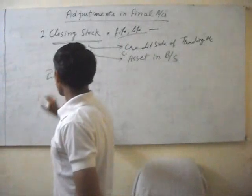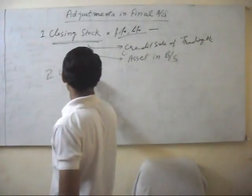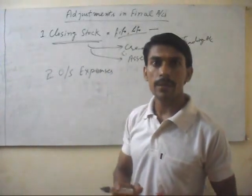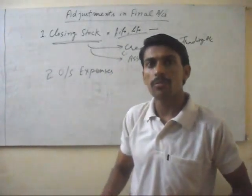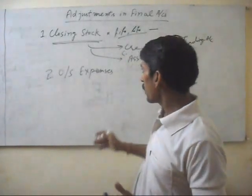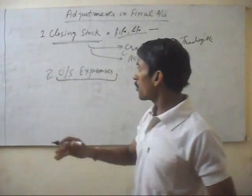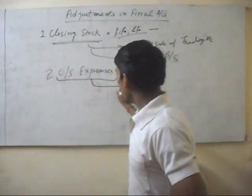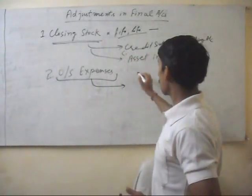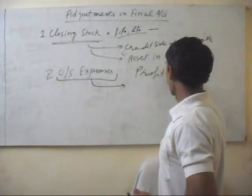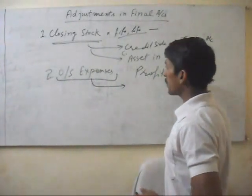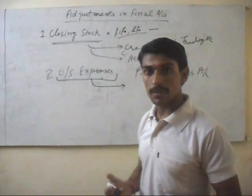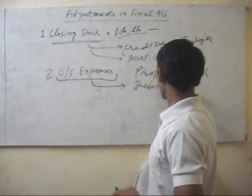Next is outstanding expenses — expenses which are payable but not paid. Suppose we have to pay salary. At the end of the year, all outstanding expenses will be calculated and added to the normal expenses in the profit and loss account, if these are indirect expenses. Otherwise, these expenses will go to the debit side of the trading account.